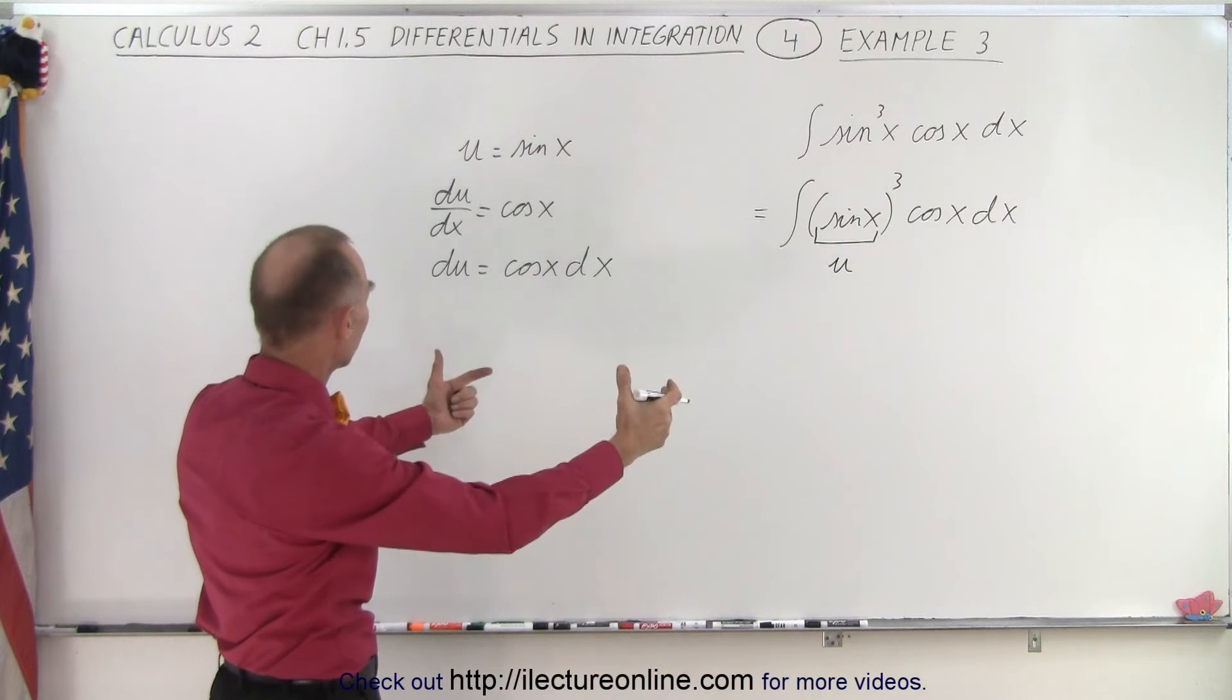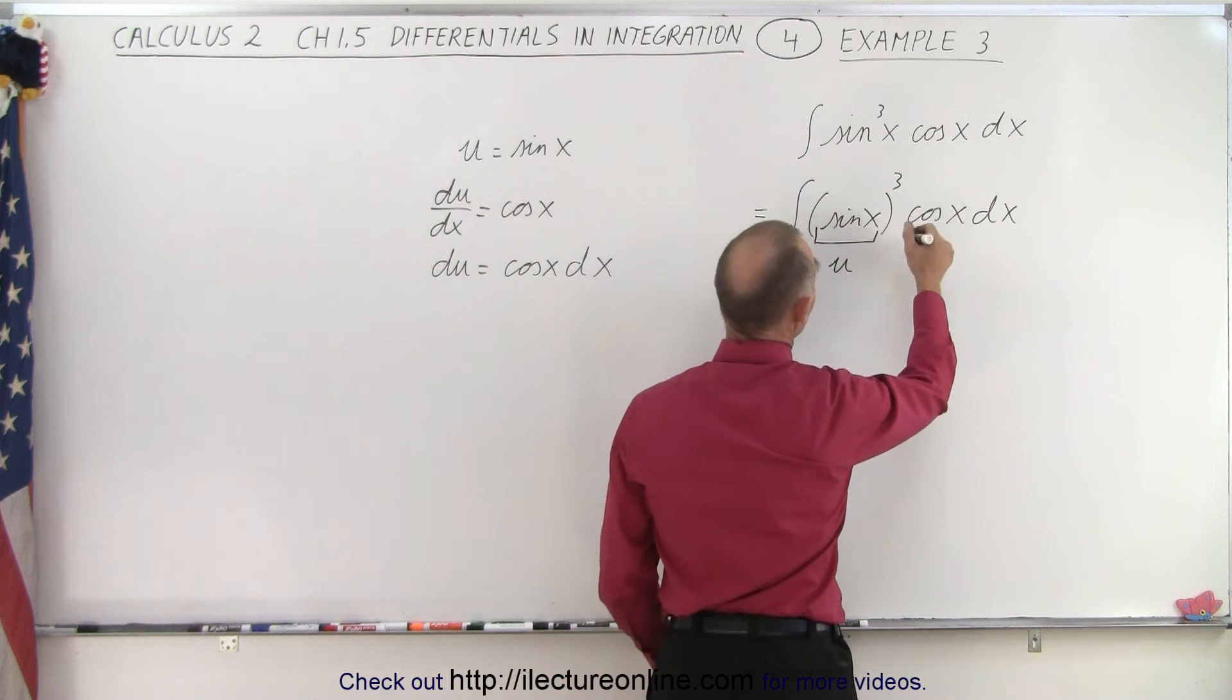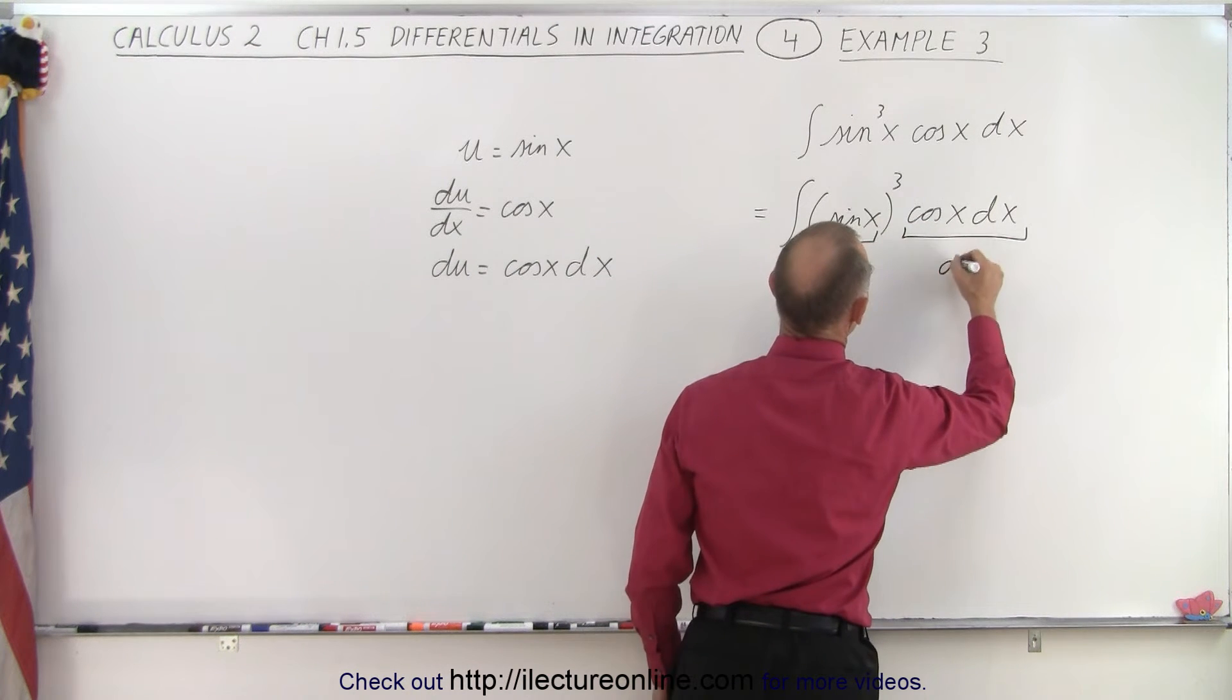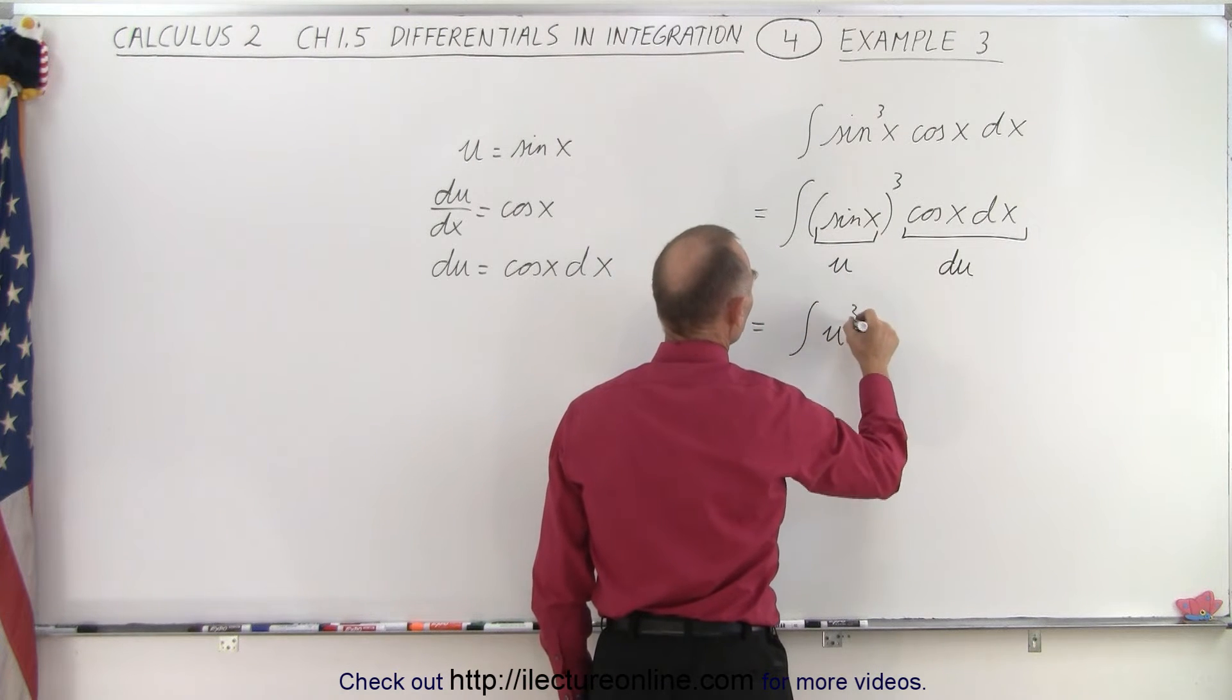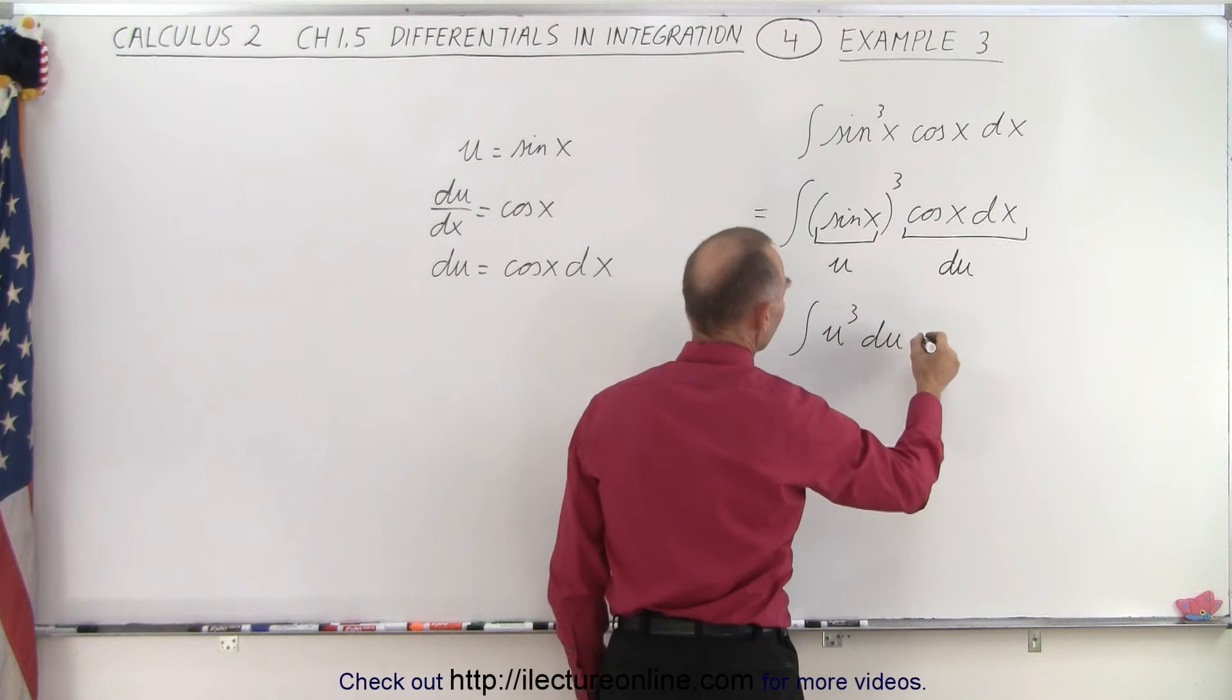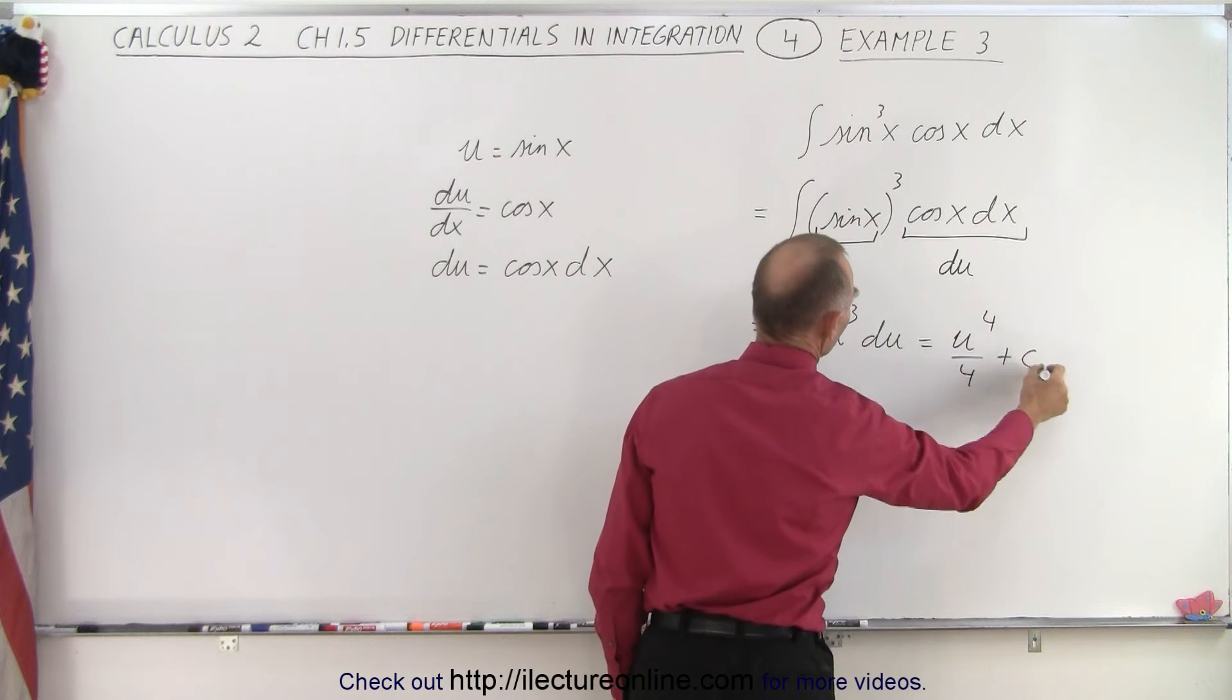Alright, so now we take a look and say, well I have my du. If this is u cubed, then my du is this. I don't have to make any more changes. I'm ready to integrate it. This is the same as saying the integral of u cubed du. Of course when I integrate, I get u to the fourth over four plus a constant of integration.